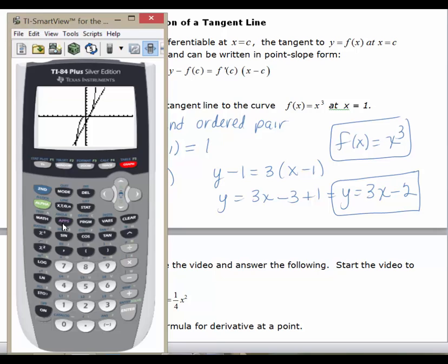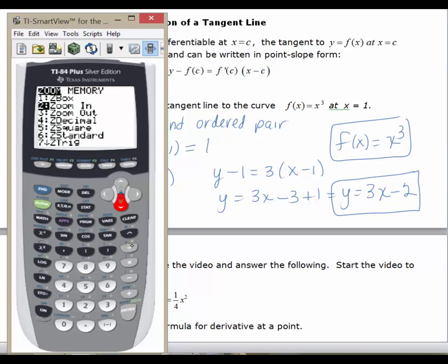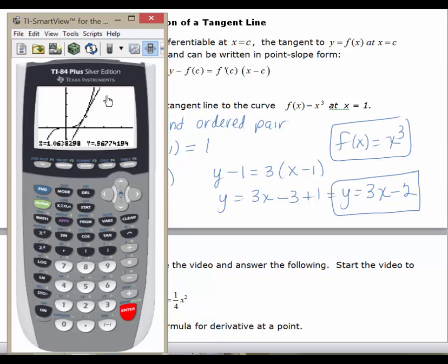I know that the point of tangency for this problem is 1. So I'm going to trace on 1, hit enter, and I'm going to zoom in so you can see this. Zoom in, hit enter. You can get a better idea of that point of tangency right here. I'm going to hit trace on 1 again and hit enter, and I'm going to zoom in one more time.